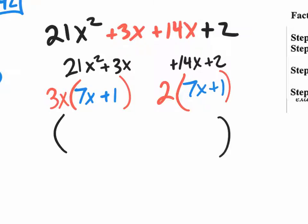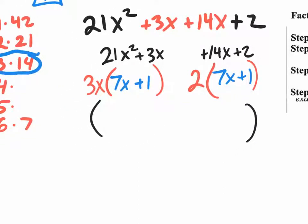So step three on factoring by grouping, the final step is to do your exaggerated parentheses and pull out that common binomial. Common binomial, I'll write it right here. That common binomial is 7x plus 1.